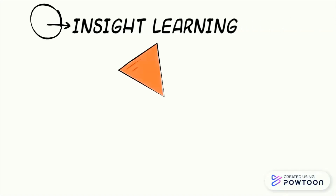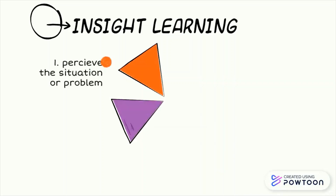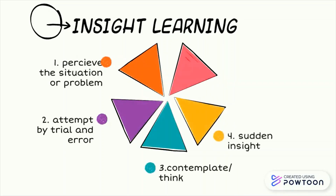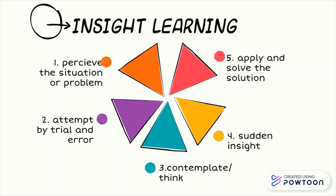Now in a very simple way, let us see the steps involved in insight learning. First, we perceive the problem or the situation. Then we try to attempt by trial and error, and after failing we contemplate or think, and then we get sudden insight. We then apply that insight and solve the problem.